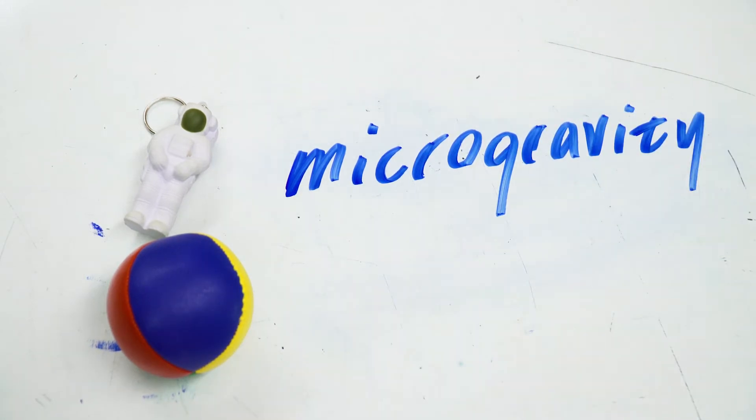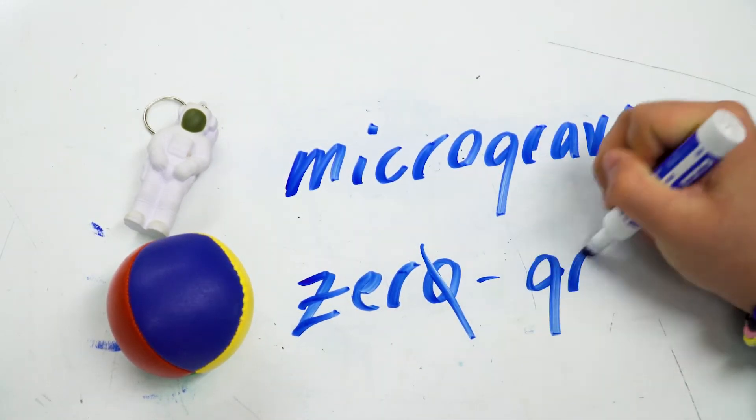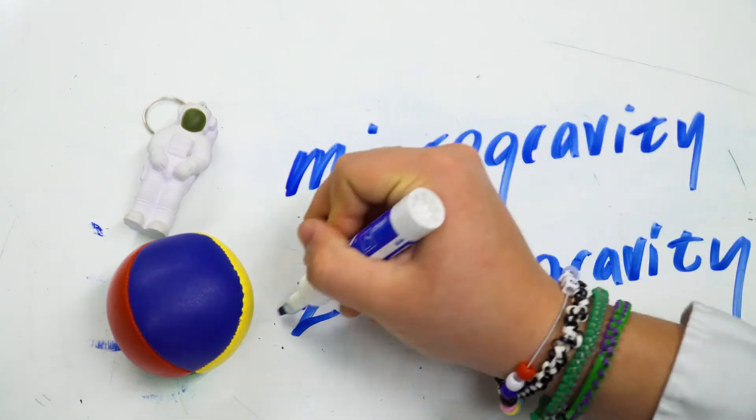Even though you'll commonly hear people use the term zero gravity, this is one of those things that's kind of like, eh. But most scientific papers I've seen use the term microgravity, and NASA actually uses it as well, so it's the term we'll be using on this show. Because at the Astrobotany Show, we're sticklers for science.